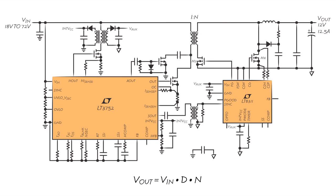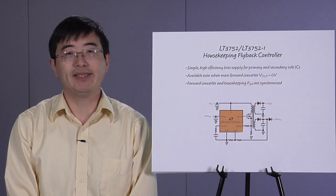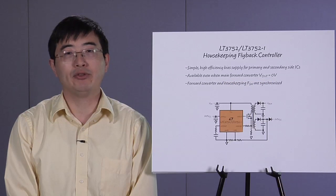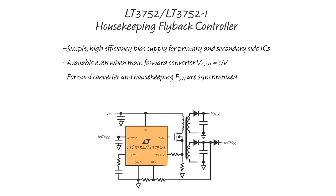VOUT is accurately controlled by trimming the voltage second clamp with respect to the switching frequency. The LT3752 and LT3752-1 include an internal constant frequency flyback controller for generating a housekeeping supply. The housekeeping supply can efficiently provide bias for both primary and secondary ICs from auxiliary windings in the main forward transformer, reducing transformer complexity, size, and cost.